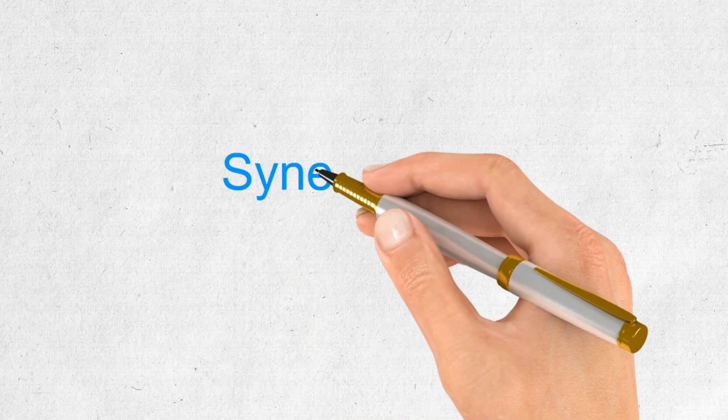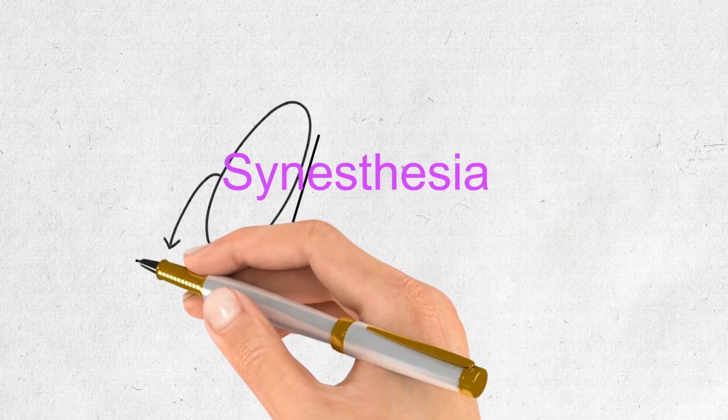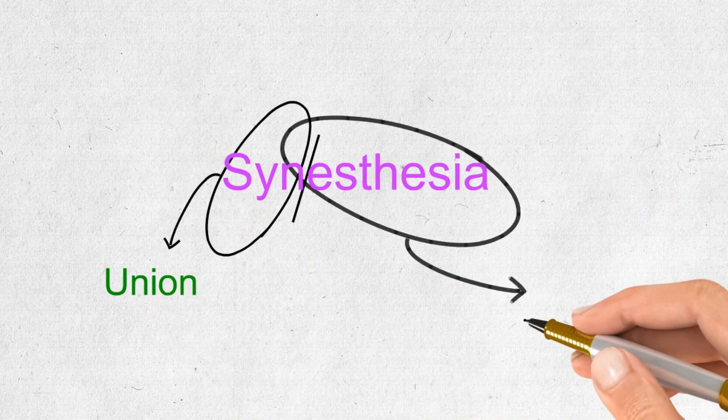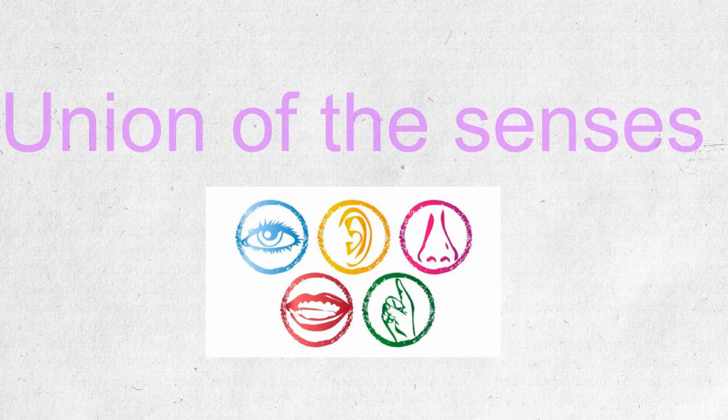Synesthesia is made up of two parts. Syn, which means union, and aesthesia, which means senses. So combine these two words and you will have union of the senses.